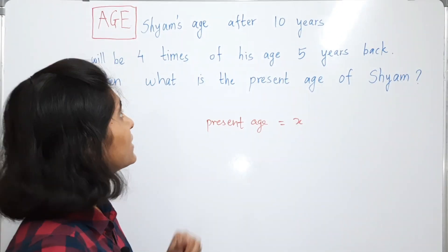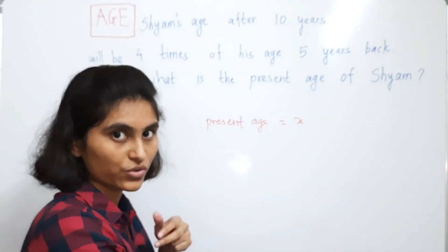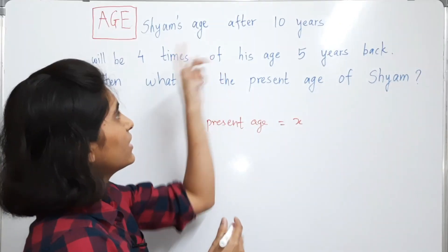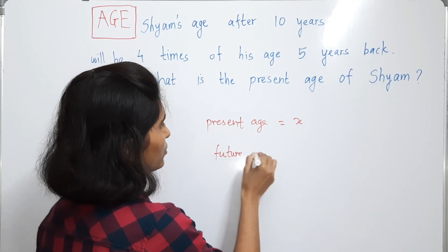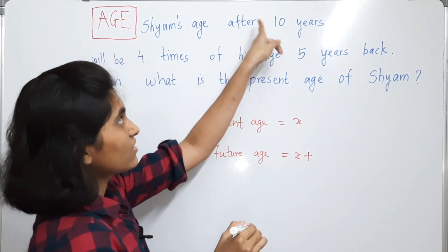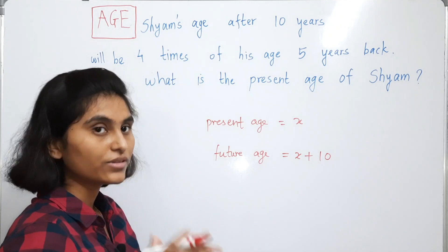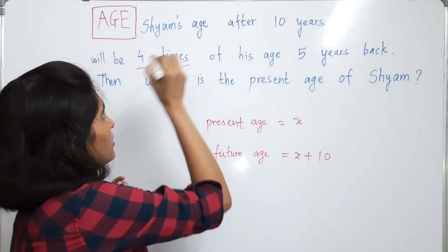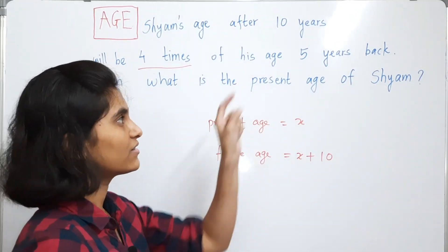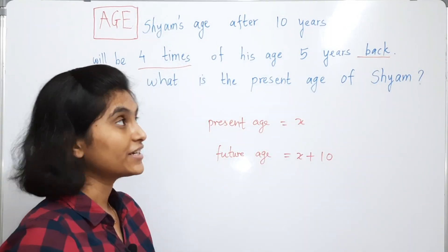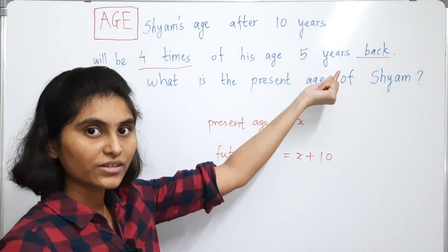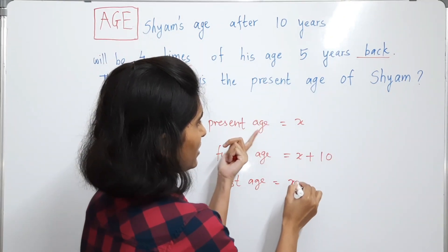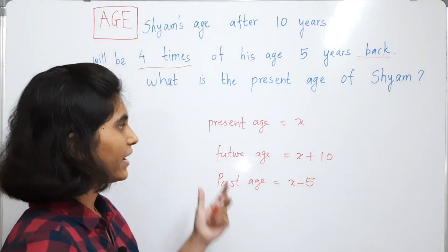How to find that equation? Look at this word 'after' — that means it is some event in the future. So whenever you see the word 'after', you just add this quantity to x. That means the future age is x plus 10, since it is after 10 years. This age x plus 10 will be 4 times of his age 5 years back. Now, the word 'back' denotes some event in the past, so we have to subtract 5 years from the present age. The past age is x minus 5.